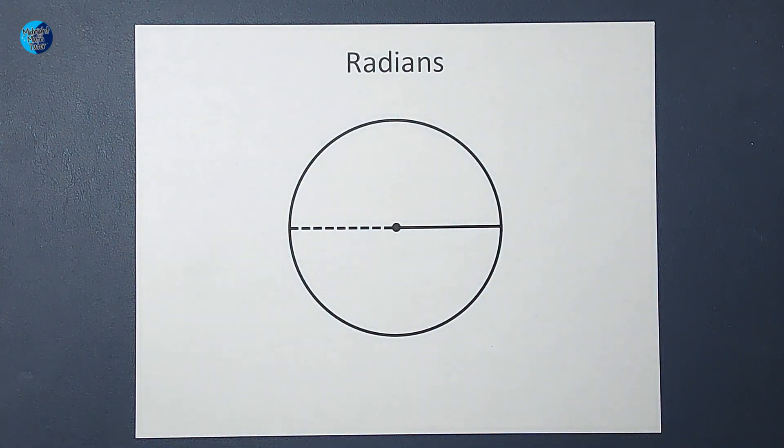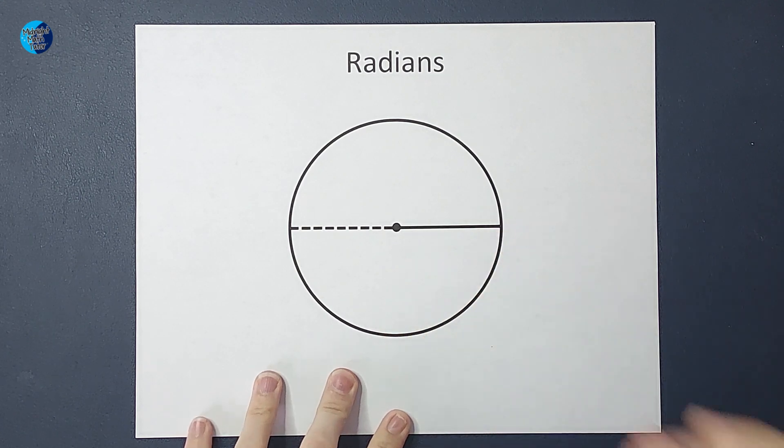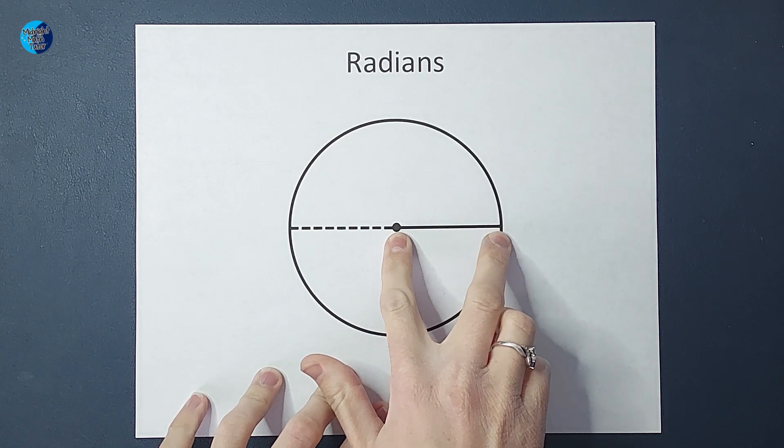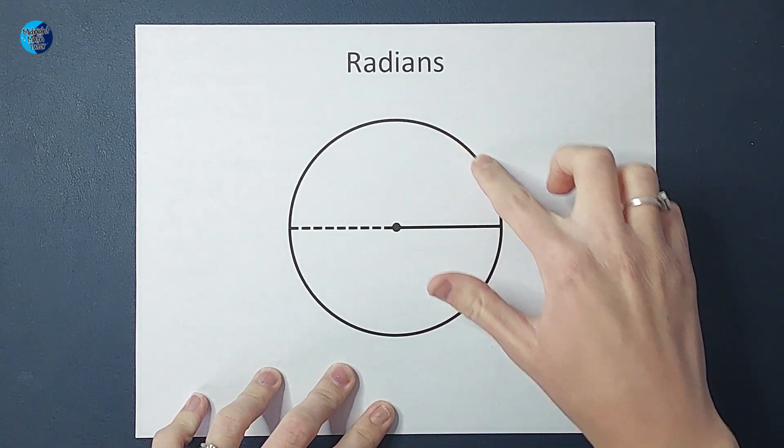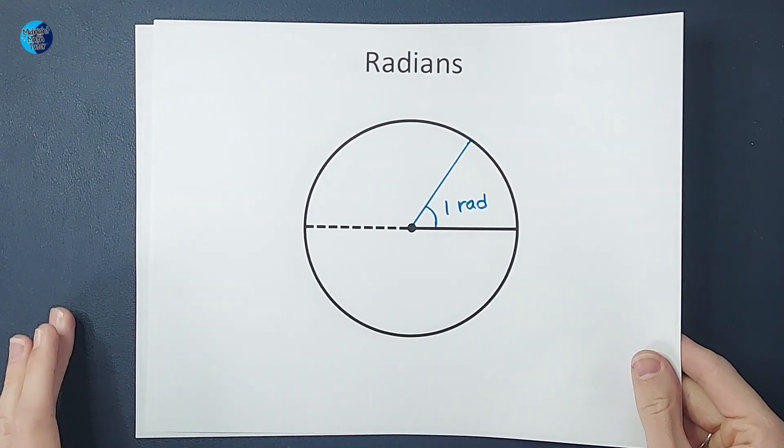So, if we have our circle, radians have to do with the relationship between my radius and arc length. So, if I take the measure of my radius and do the same thing as an arc length, it's gonna look something like this.